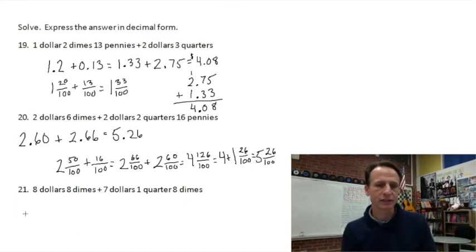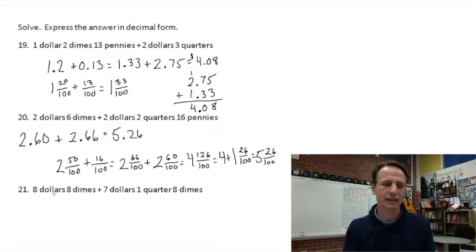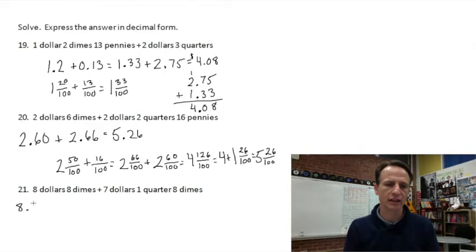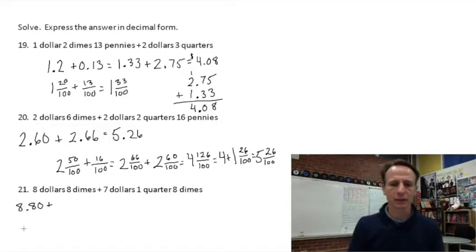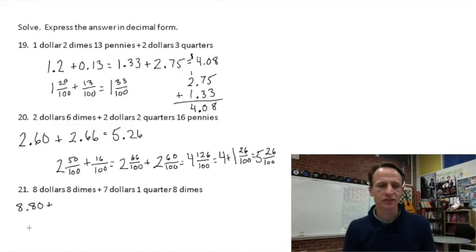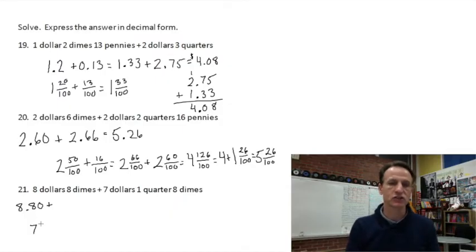Eight dollars and eight dimes: eight holes and 80 cents — no regrouping there. That's 8.80. Then we have seven dollars and one quarter, which is 25 cents — so seven dollars and 25 hundredths.